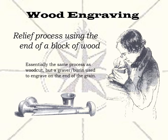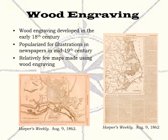The next mapmaking process is another relief process — that of wood engraving. This is essentially the same process as making a woodcut, creating a relief image on a block of wood by cutting away the parts not going to hold ink. However, with a wood engraving, the image is cut on the end of the grain using a graver or burin. The process was developed in England early in the 18th century and firmly established by Thomas Bewick at the end of that century. Wood engraved maps were popularized by their use in illustrated newspapers of the mid-19th century, as they could be printed on the same presses as text, were quick and inexpensive to produce, and with electrotyping, could be run off in the thousands. Overall, however, relatively few maps were made using wood engravings.